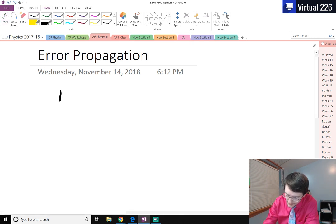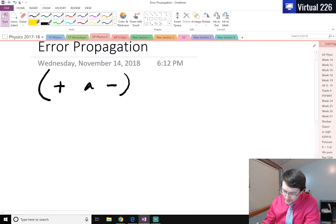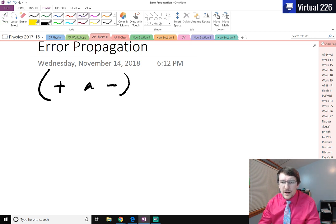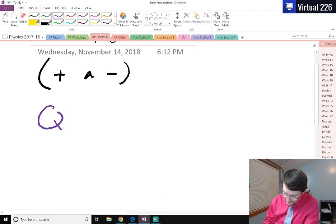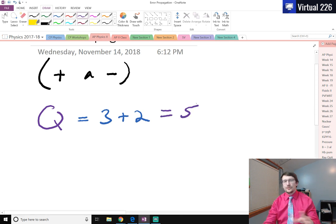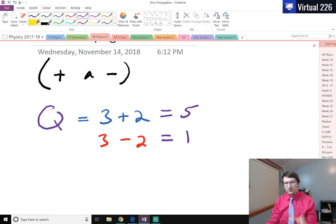Let's get started with error propagation for addition and subtraction. We are going to set a value which we'll call Q here, and Q is basically your answer. If we were in elementary school asking what's three plus two, Q would be the answer of five. If we mix that up, what's three minus two? It equals one. Q is just the value if you do the straight math.